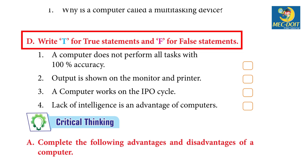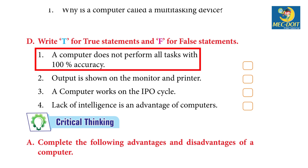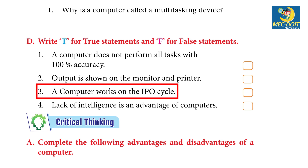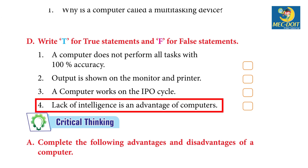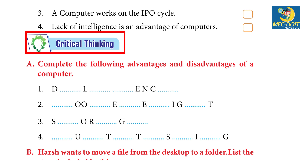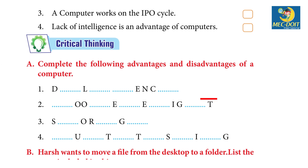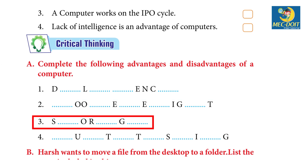Write T for true and F for false. 1. A computer does not perform all tasks with 100% accuracy. Answer: False. 2. Output is shown on the monitor and printer. Answer: True. 3. A computer works on the IPO cycle. Answer: True. 4. Lack of intelligence is a disadvantage of computers. Answer: False. Critical thinking: Complete the advantages and disadvantages of a computer. Answer: 1) Diligence, 2) Poor eyesight, 3) Storage, 4) Multitasking.